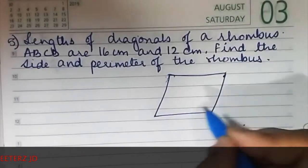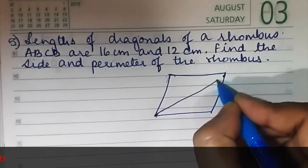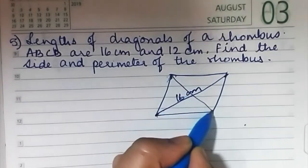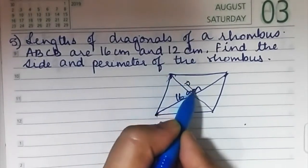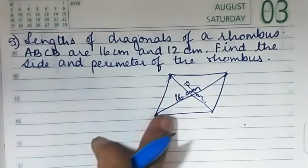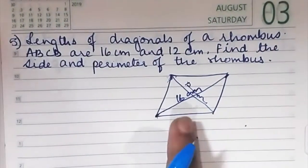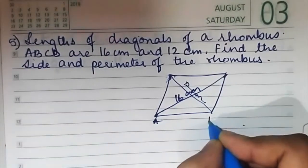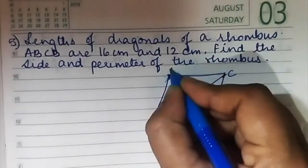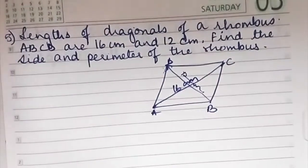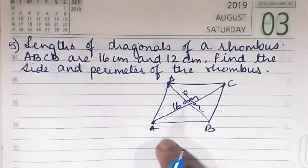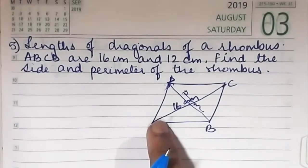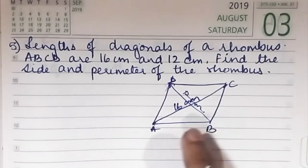This is your rhombus. The diagonals are given — this is 16 and this is 12 centimeters. This is A, B, C, D. They want the sides and they want the perimeter. Once you get one side you can get the perimeter because all the sides are equal — you just have to multiply it by four.